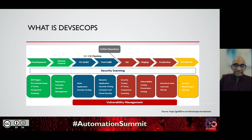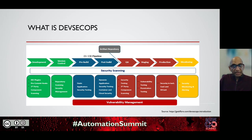If all the gates are passed, the CI-CD pipeline will deliver an artifact that can be deployed. These activities are represented in blue. Once the artifact is created, it can be deployed to QA and staging environments for further security testing as well as user acceptance testing. Once all of the testing has been completed, the artifact can be deployed to production. These activities are in red. Once production deployment is complete, there needs to be continuous monitoring of the application, as identified in yellow.